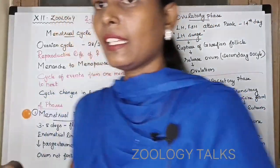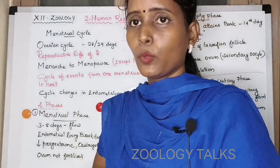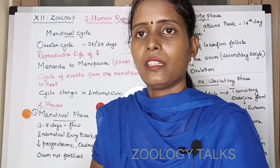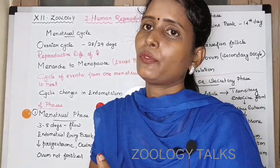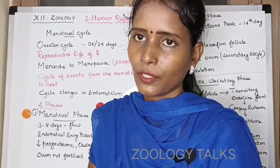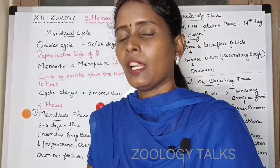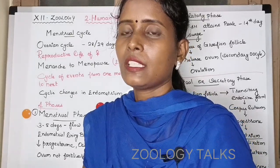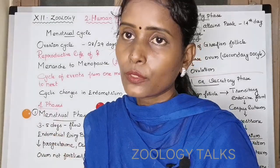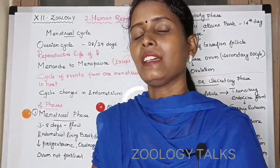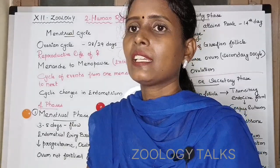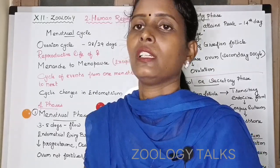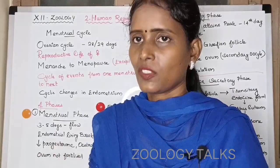The cycle of events involves cyclical changes in the endometrium of the uterus as well as in the ovaries. So both the uterine endometrium and the ovaries undergo changes during the menstrual cycle. In the menstrual cycle, there are many stages and many phases.